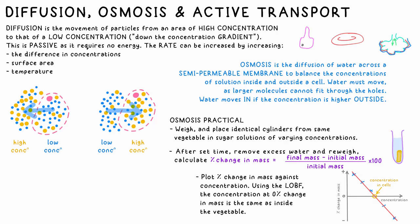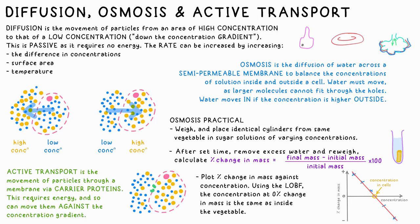Glucose and other nutrients and minerals can move through a membrane by active transport, where carrier proteins use energy to move substances through the membrane. Because energy is used, this can move substances against a concentration gradient — for example, moving mineral ions into plant root hair cells.